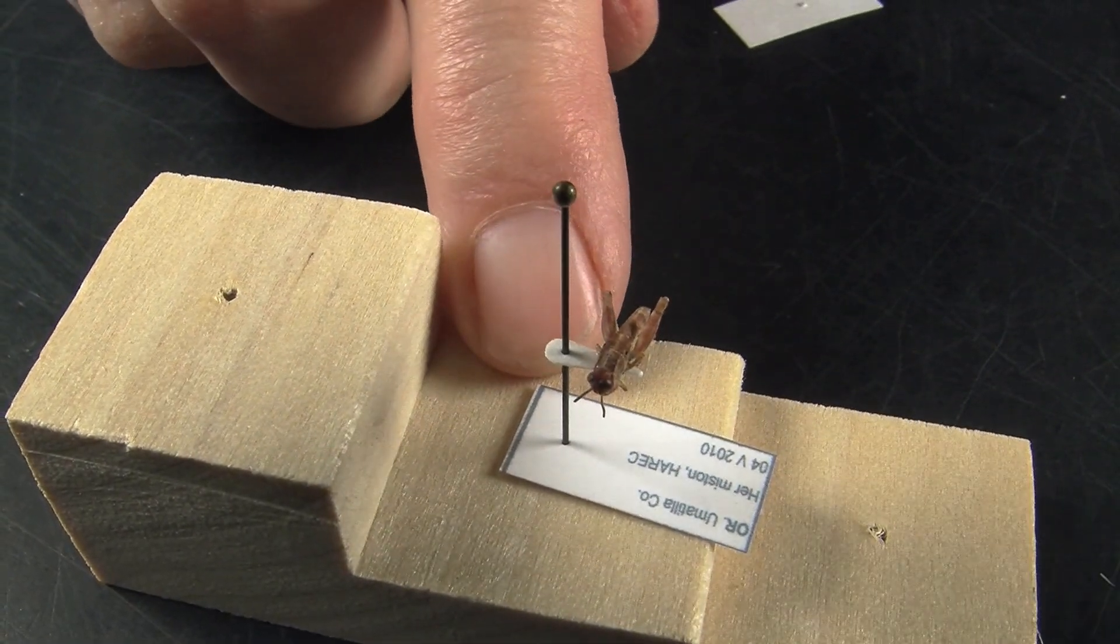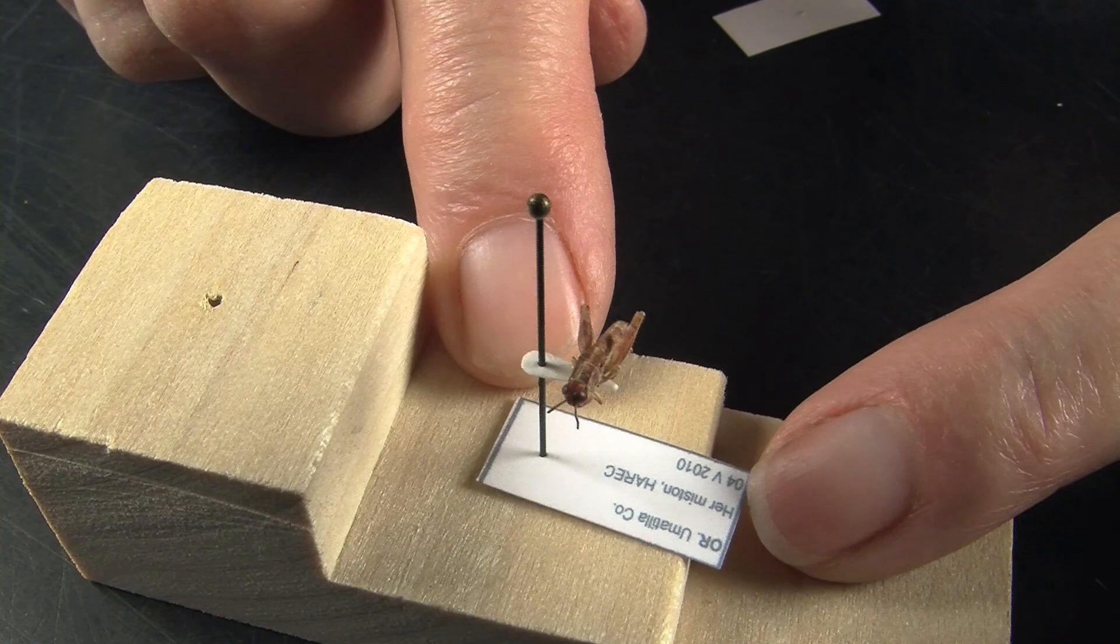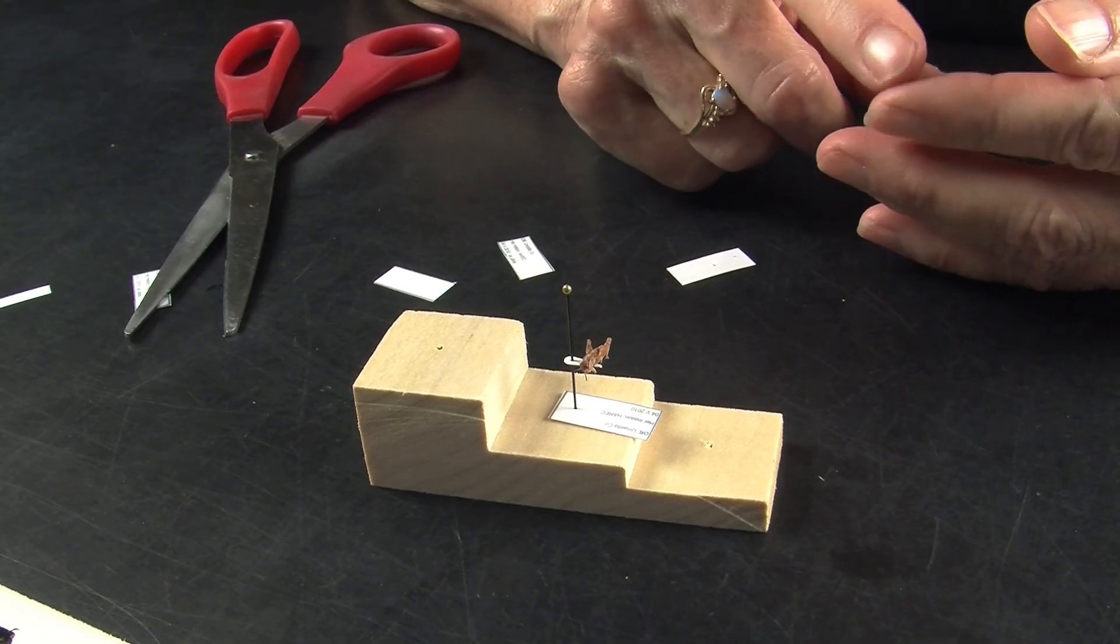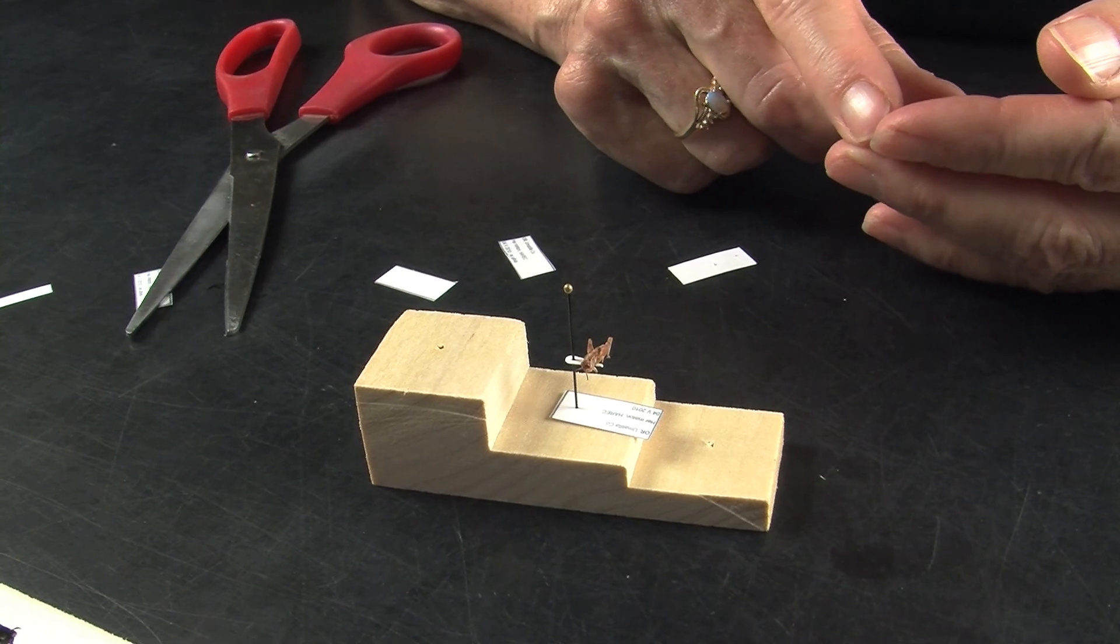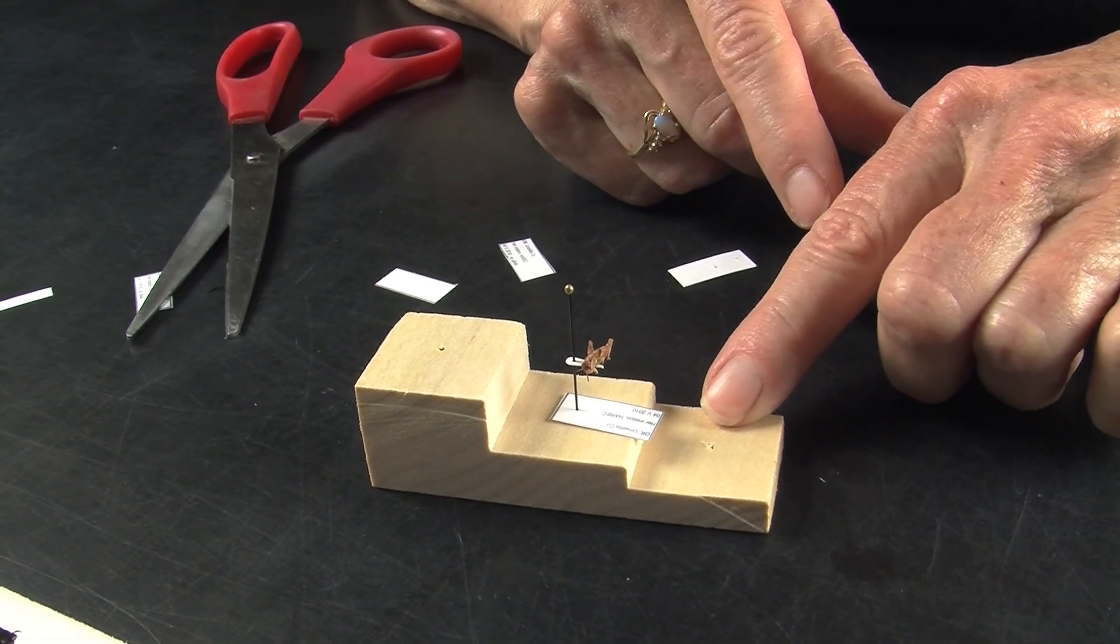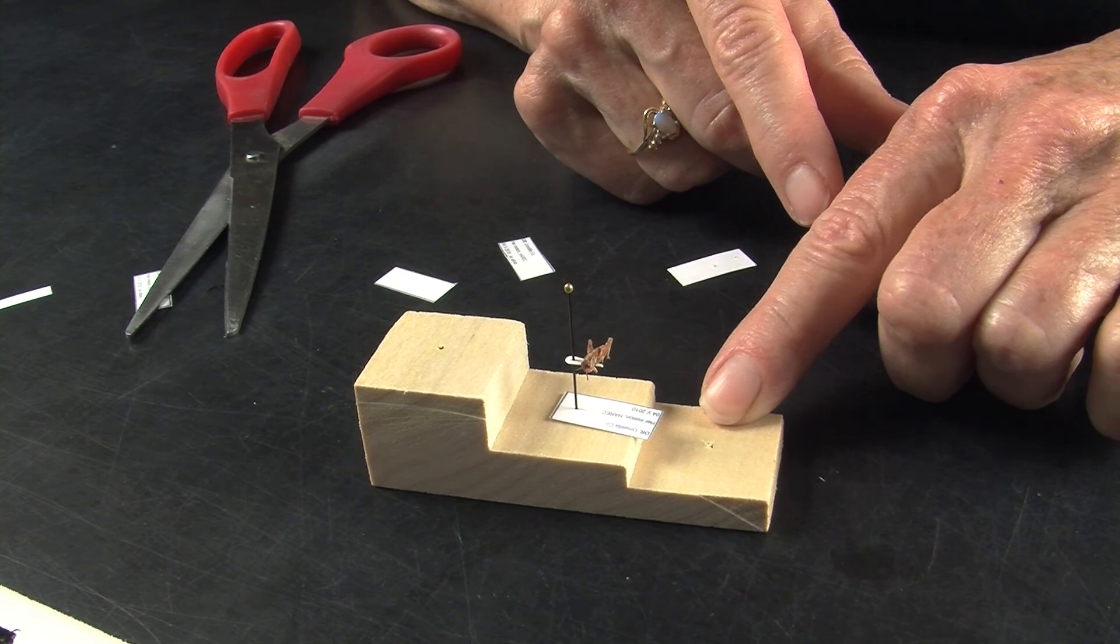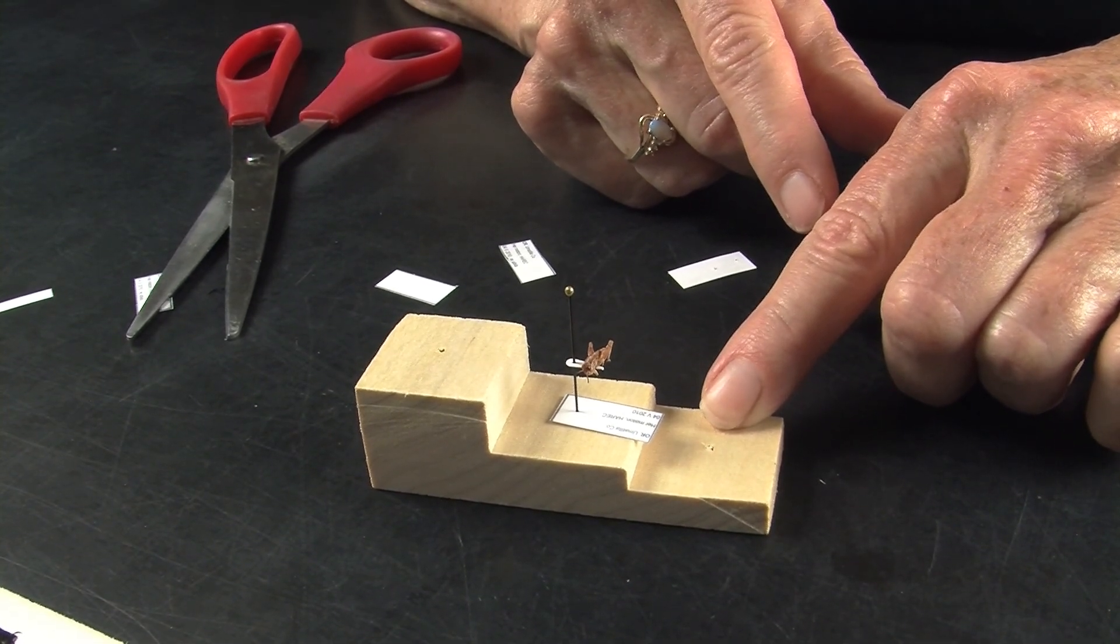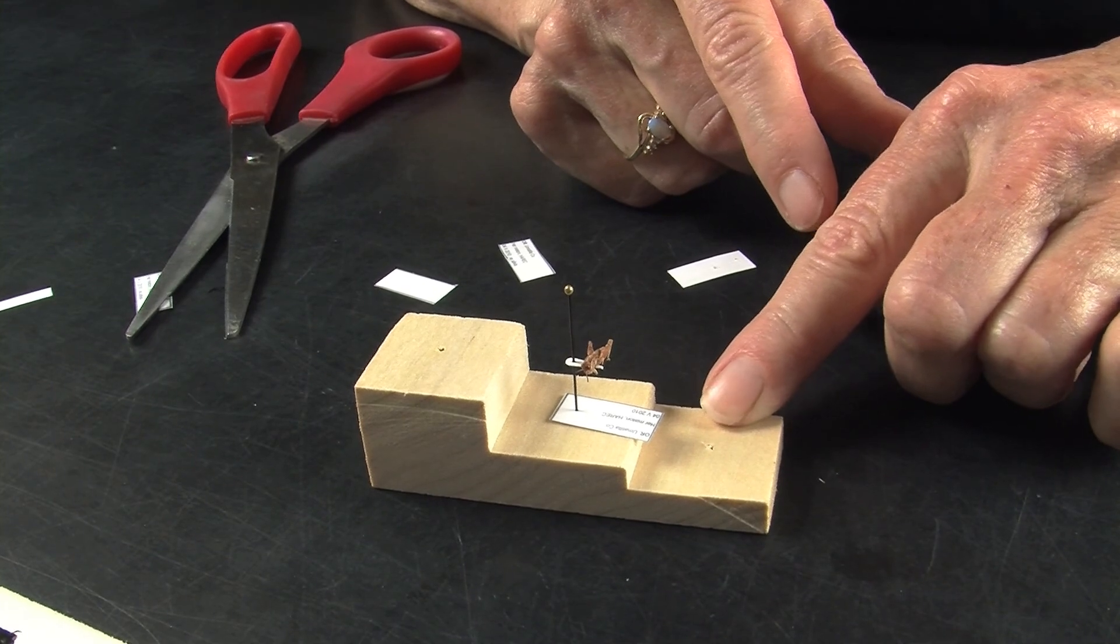the person who collected, and then whatever identification we know, whether it's to the order or to the family. This third layer can be used for a second label and might include any special information we've learned about this insect. See you next time.